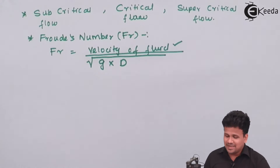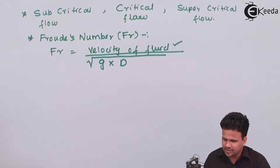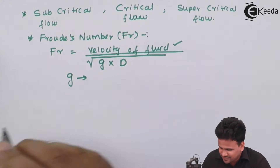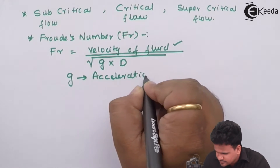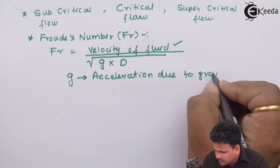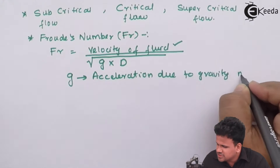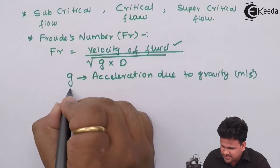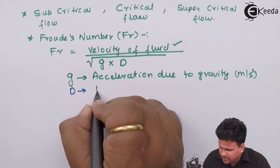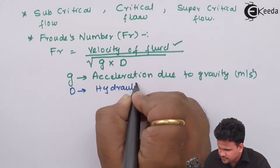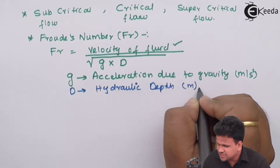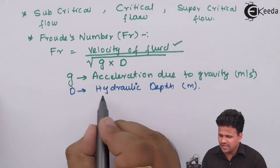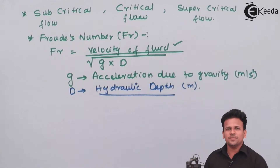In the Froude number formula, g is the acceleration due to gravity, which is in meters per second squared, and d is the hydraulic depth, which is given in meters. Let us now study what hydraulic depth actually is.